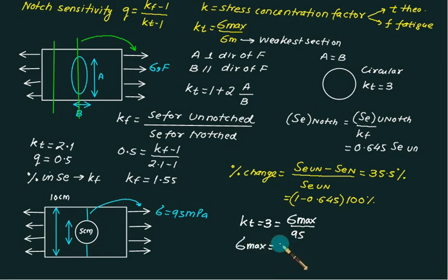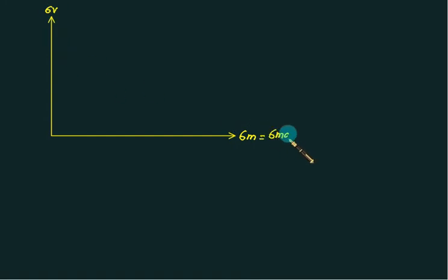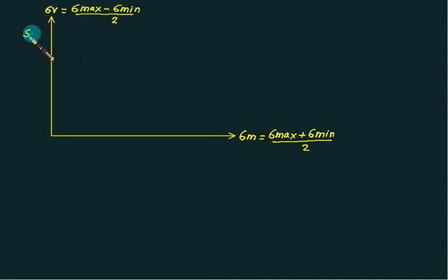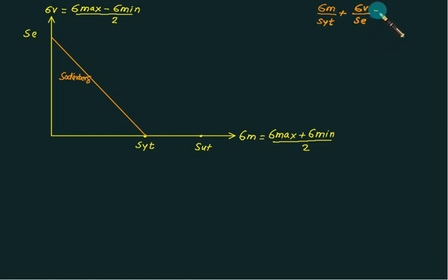For fatigue theories of failure, we plot sigma_mean on the X axis and sigma_v on the Y axis. Recall that sigma_mean = (sigma_max + sigma_min) / 2 and sigma_v = (sigma_max − sigma_min) / 2. They will provide SE on the Y axis and SYT and SUT on the X axis. If you join the SE value on the Y axis with SYT on the X axis with a straight line, this theory is called the Soderberg criterion. Using the intercept equation: sigma_m / SYT + sigma_v / SE = 1.